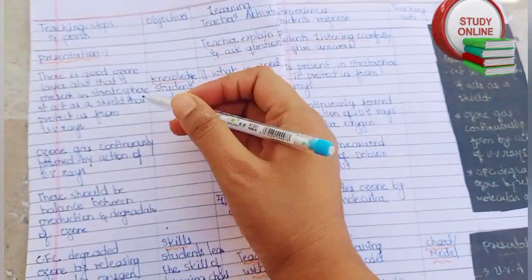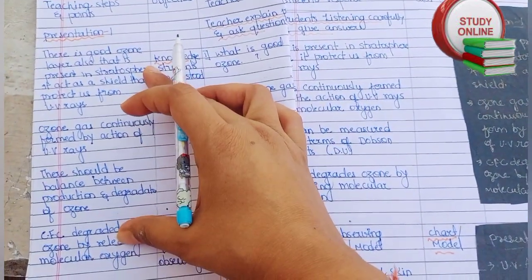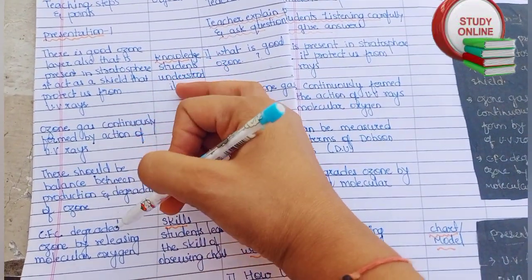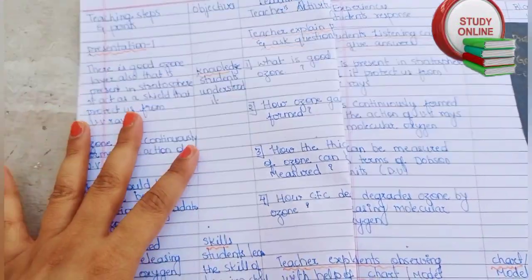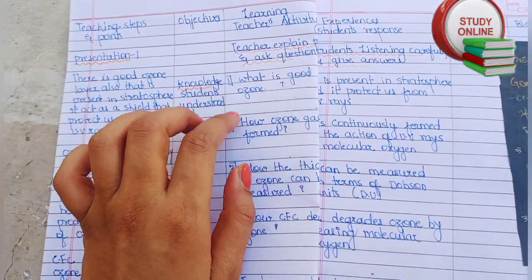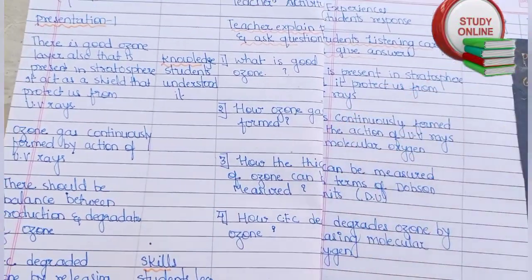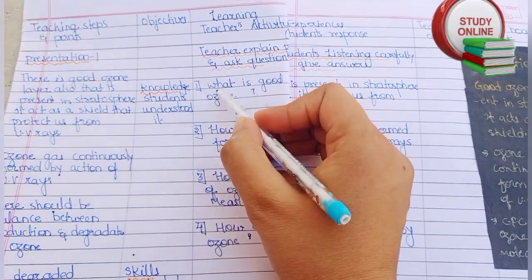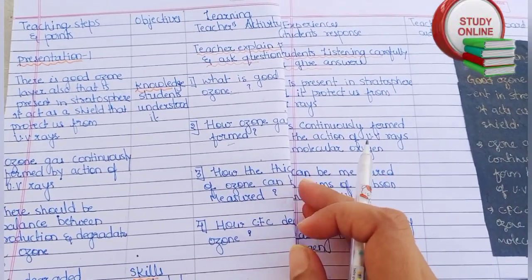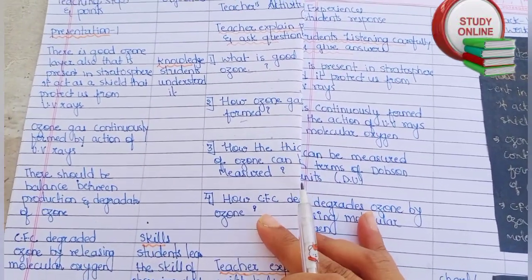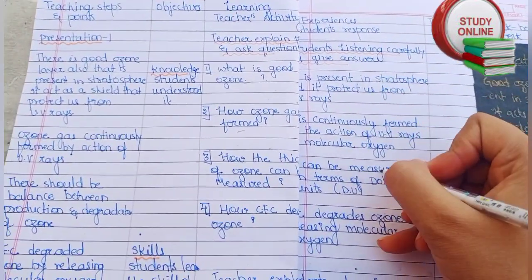Moving to the next page, here is Presentation 1. I have written all the main points, and the teacher has to explain everything properly for five to six minutes. After the explanation, we also ask questions: what is good ozone, what is ozone gas for, how ozone gas is formed, how the thickness of ozone can be measured, how CFCs degrade ozone — and here are the expected answers.